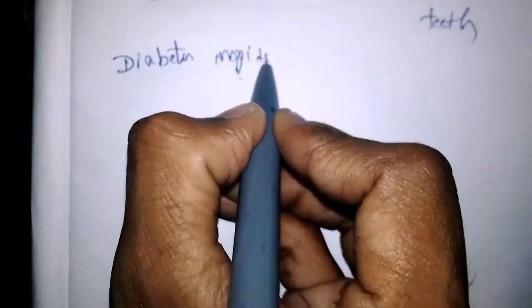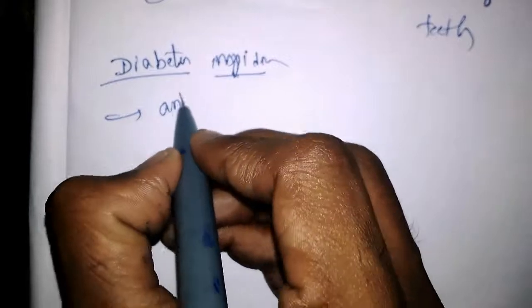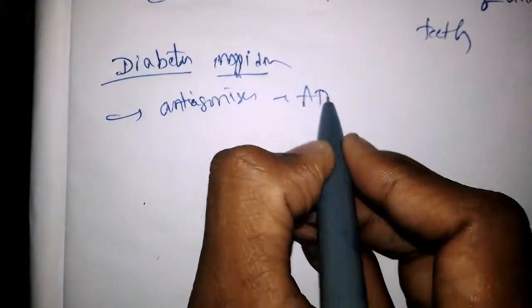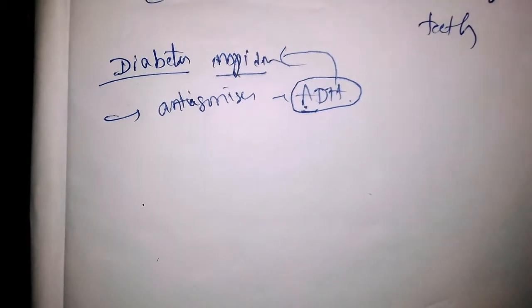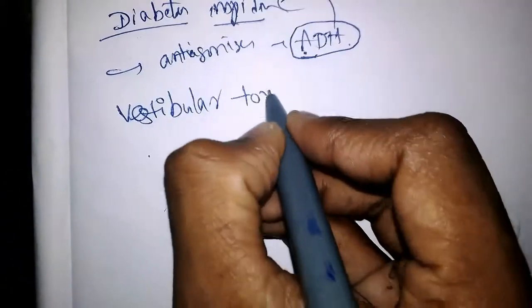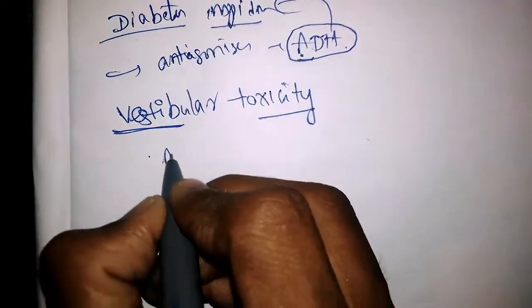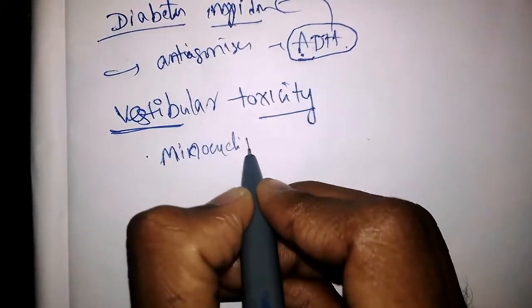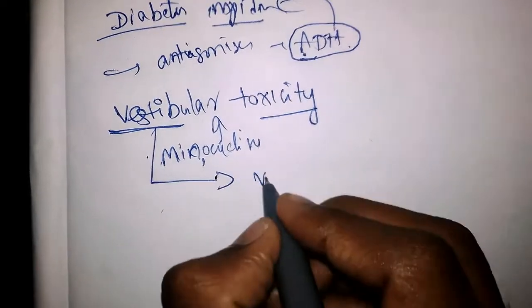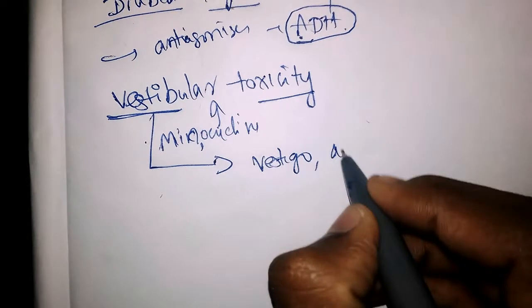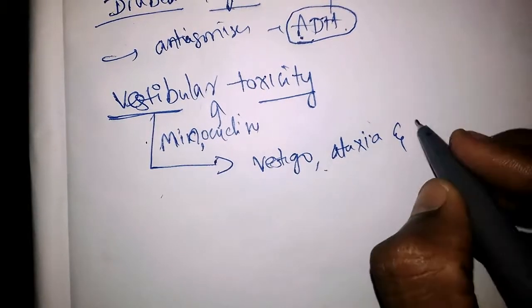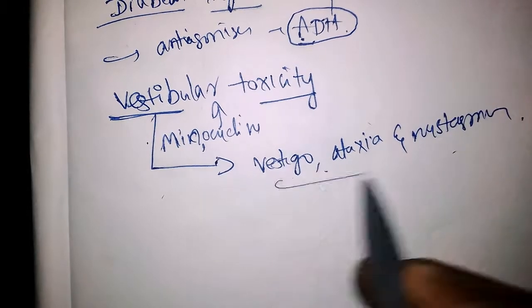Regarding diabetes insipidus: tetracyclines antagonize antidiuretic hormone (ADH), and by antagonizing ADH they can precipitate diabetes insipidus. Minocycline causes vestibular toxicity, which is manifested as vertigo, ataxia, and nystagmus.